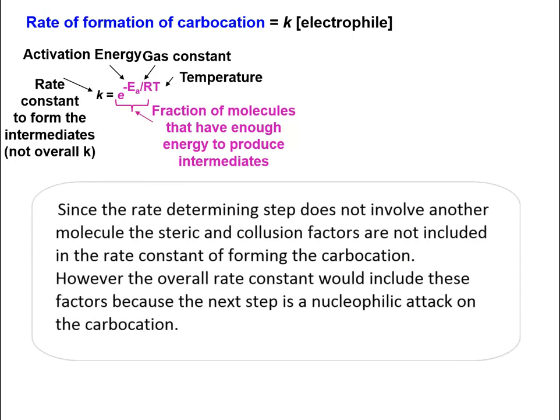Since the rate determining step does not involve an attack of a nucleophile on the electrophile, and only one molecule is involved, the steric and collision factors are not included in the rate constant. However, the rate constant would include these factors, because the next step is a nucleophilic attack on the carbocation.